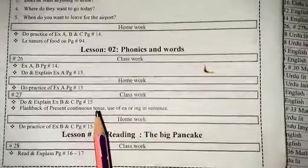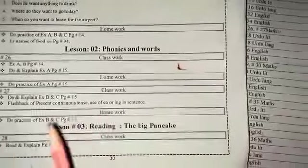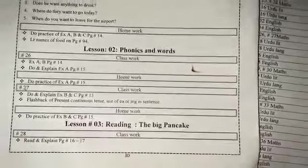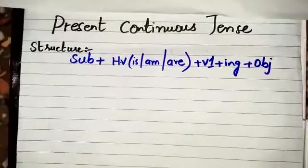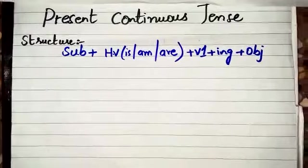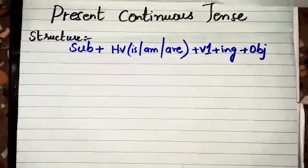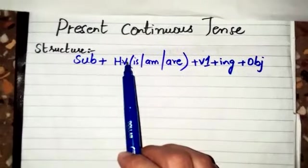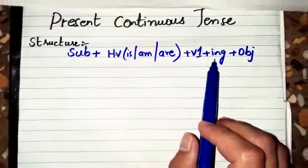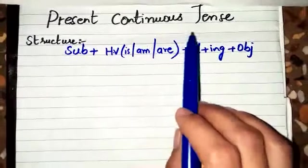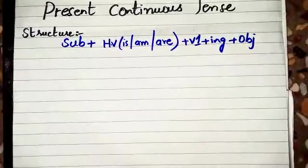After that, we will take a little look back at present continuous tense — the use of EA and ING and how sentences are used. Let's look at the structure. First, you have the subject. Then the helping word — is or are. Then the first form of the verb with ING. Without this structure, you cannot make a complete sentence in present continuous tense.